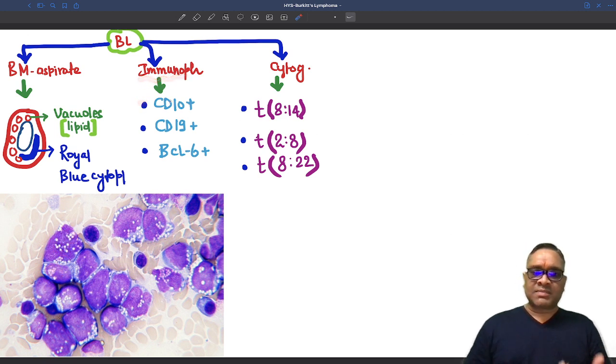On immunophenotyping, because they are B-cell tumors, CD10 positive, CD19 positive. They are arising from the germinal center, so BCL6 positive.